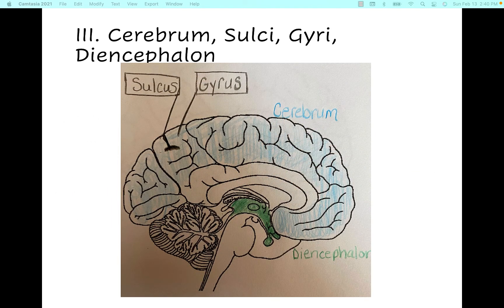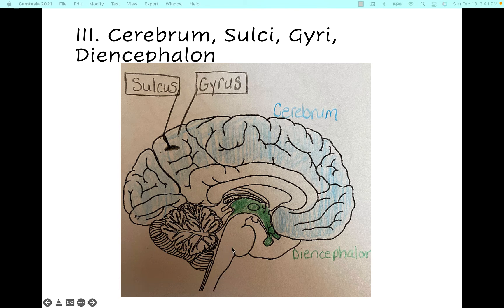Next we have objective 3 — being able to identify different gross anatomy of the nervous system. We have the cerebral hemisphere, which consists of the cerebrum. The spinal cord will be back here. We also have the diencephalon, and we have gyri and sulci. The sulci are going to be the ridges and the gyri are the grooves. The diencephalon is a region that contains the thalamus and oversees functions related to survival. The cerebrum and cerebral hemisphere are the same thing.